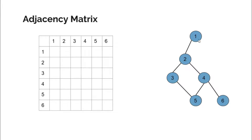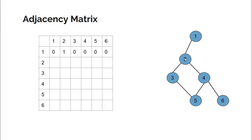We can see that node 1 is connected to node 2, and hence cell (1,2) would be 1 and the rest of the cells in row 1 would be 0. There is no edge from node 1 to itself, so (1,1) is 0. There is an edge between node 1 and 2, so (1,2) is 1. There are no edges from node 1 to any other node, so the rest of the cells are 0.